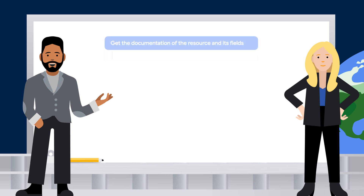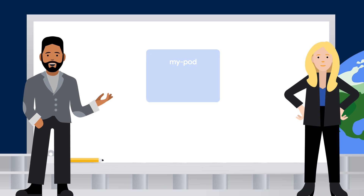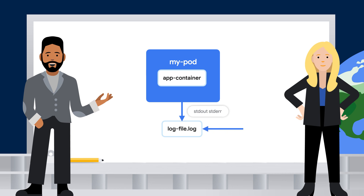I use kubectl explain whenever I come across a new API object that I don't know. What's especially nice about it is how I can dig into the documentation of specific fields too — so it's like a one-stop command line shop for defining objects. kubectl logs is useful because it lets me see what's happening inside of a pod. It logs events from containers and stores them, so I can easily access them.